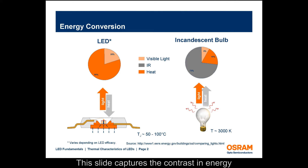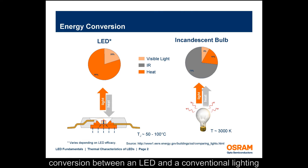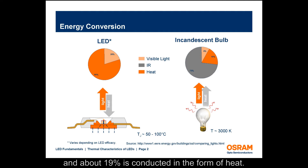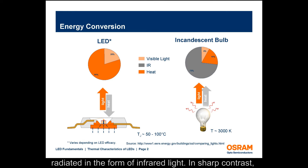This slide captures the contrast in energy conversion between an LED and a conventional lighting source, such as an incandescent bulb. In an incandescent bulb, approximately 8% of the supplied electrical energy is converted into visible light, about 19% is conducted in the form of heat, and about 73% is radiated in the form of infrared light.